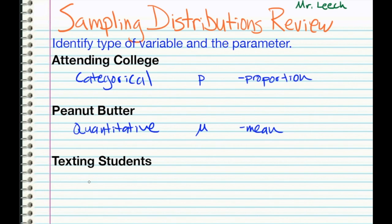And lastly, texting students. This is also going to be quantitative. The unit is number of texts. The question asked about a sum, a total number of texts. And we can turn that total number of texts into a mean. We just have to divide it by how many elements we have. So this two will be a mean.